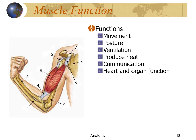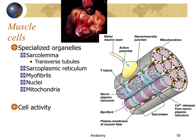The muscular system functions to produce movement with the skeletal system, maintain position and posture, ventilate the lungs, produce heat and aid temperature regulation, and enable communication. Other types of muscle carry out heart and organ function. Muscle cells are specialized to respond to nerve stimulation — they can send an action potential across their surface via the sarcolemma or transverse tubules, and they have a modified endoplasmic reticulum (sarcoplasmic reticulum) and are filled with myofibrils, the contractile proteins.